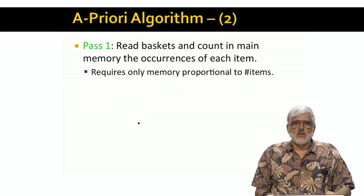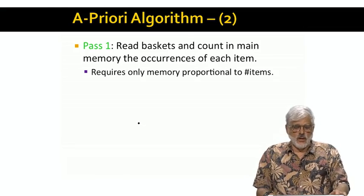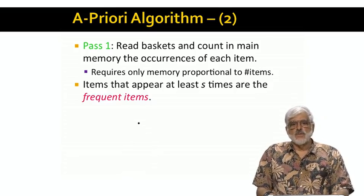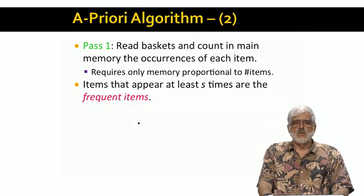On the first pass, we count the number of times each item occurs. We want to do this in main memory, and unless the number of items is beyond billions, we can set up an integer count for each item in main memory. After the first pass, we see which items appear at least s times. These are the frequent items.